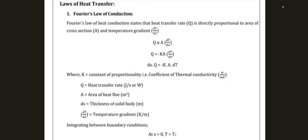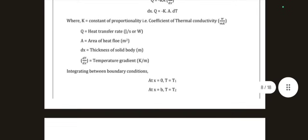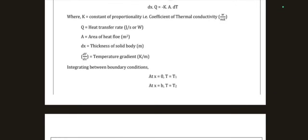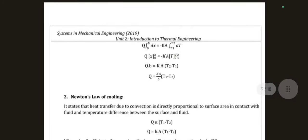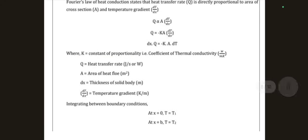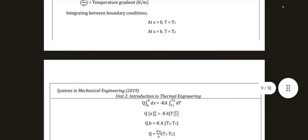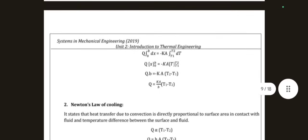K is the constant of proportionality — coefficient of thermal conductivity. Q is the heat transfer rate, A is the area of heat flow, dX is the thickness of the solid body, and dT/dX is the temperature gradient. You can write Q = −K·A·dT/dX for full marks in your answer, and optionally integrate to reach Q = K·A·(T1−T2)/B.